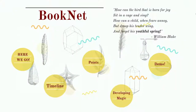First, I want to start with some quotes. "How can a bird that is born for joy sit in a cage and sing? How can a child, when fears an eye, but droop his tender wing and forget his yieldful spring?" As you can see, it's a beautiful quote, and we want everyone to have easy access to those kinds of quotes.